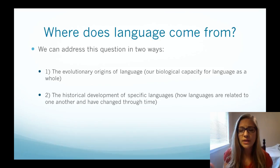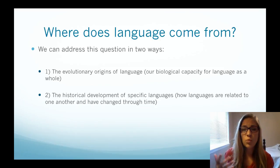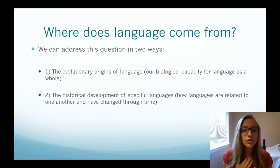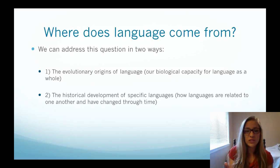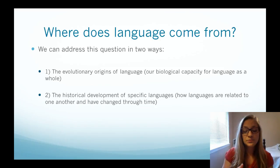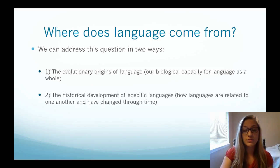So first we'll start with the evolutionary origins of language. Why might this be important? Why might we want to think about our biological capacity for language, and how could we study that? If we know that biological anthropology is part of anthropology, how could we study or try to figure out where language first developed?